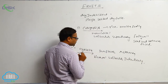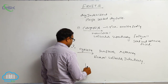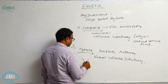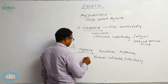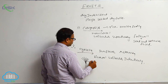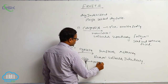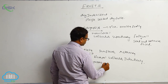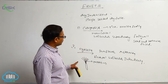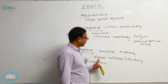Cypsela has a pappus-like structure above the fruit. Pappus means a bunch of hair-like structures. So the fruit which has a pappus is known as cypsela. Example: sunflower, Asteraceae family.